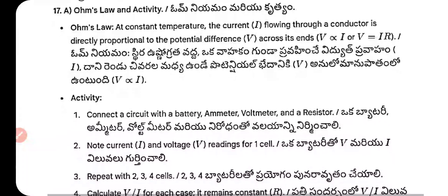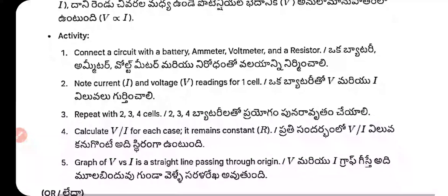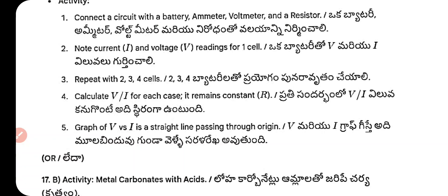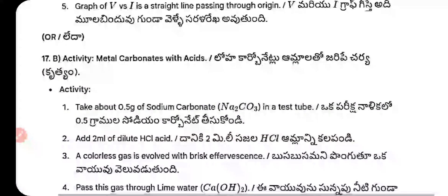Ohm's Law: At constant temperature, the current I flowing through a conductor is directly proportional to the potential difference V across its ends. V ∝ I, or V = IR. Activity: Connect a circuit with a battery, ammeter, voltmeter, and resistor. Note current I and voltage V for one cell; repeat for two, three, and four cells. Calculate V/I for each case — it remains constant. The graph of V versus I is a straight line passing through the origin.